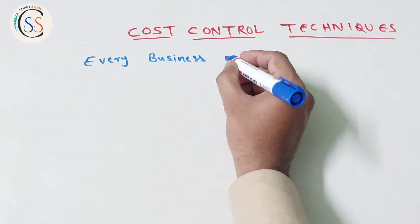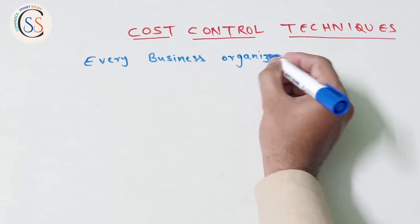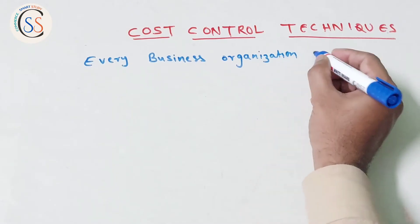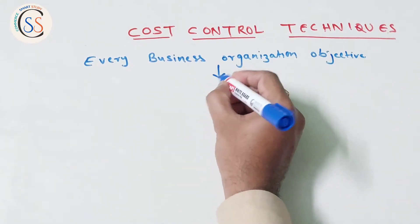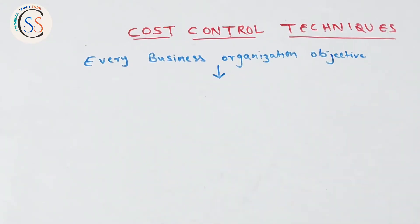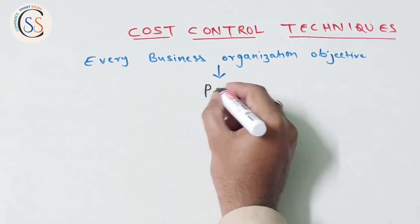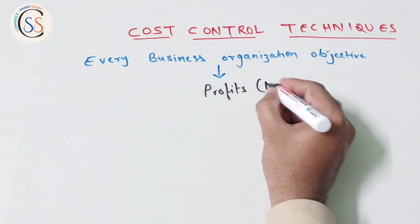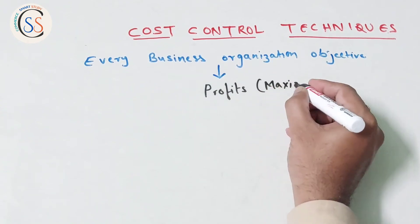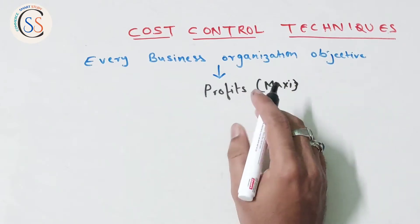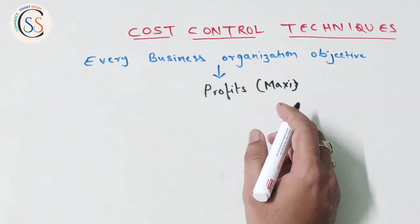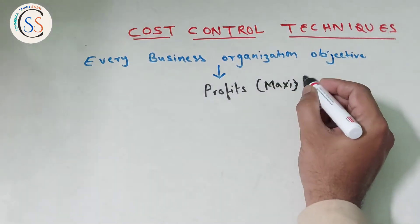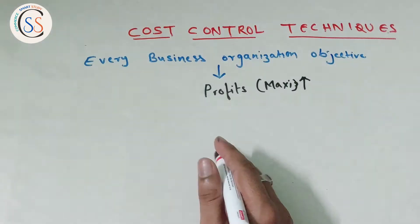So, every business organization's aim and objective is to earn profit. Whether it is a service industry or a production industry, every business has one main aim: to maximize profit — to increase gains. There are two ways to increase profit.